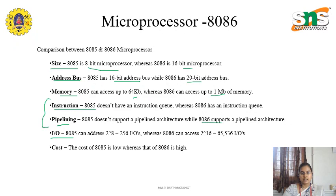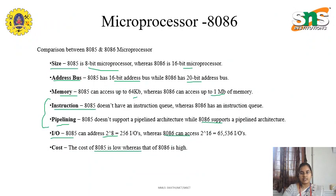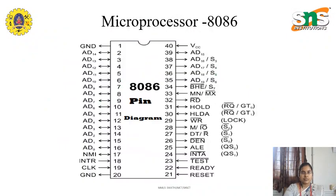Coming to the input/output access, 8085 can access up to 256 input/outputs, and 8086 can access up to 64K input/outputs. Cost-wise also, as we have the enhanced features, we can see that 8085 is low in cost, whereas 8086 is high in cost.